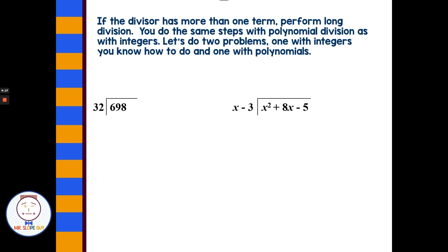If the divisor has more than one term, perform long division. You do the same steps with polynomial division as with integers. Let's do two problems, one with integers you know how to do and one with polynomials, and see if we can find out what's the same and what's different. On the left side, I would start with what times 32 goes into 6? Nothing. What times 32 goes into 69? Two times. Over on the right with the polynomial, I'm going to ask myself, what times x would be x squared? And my answer is x.